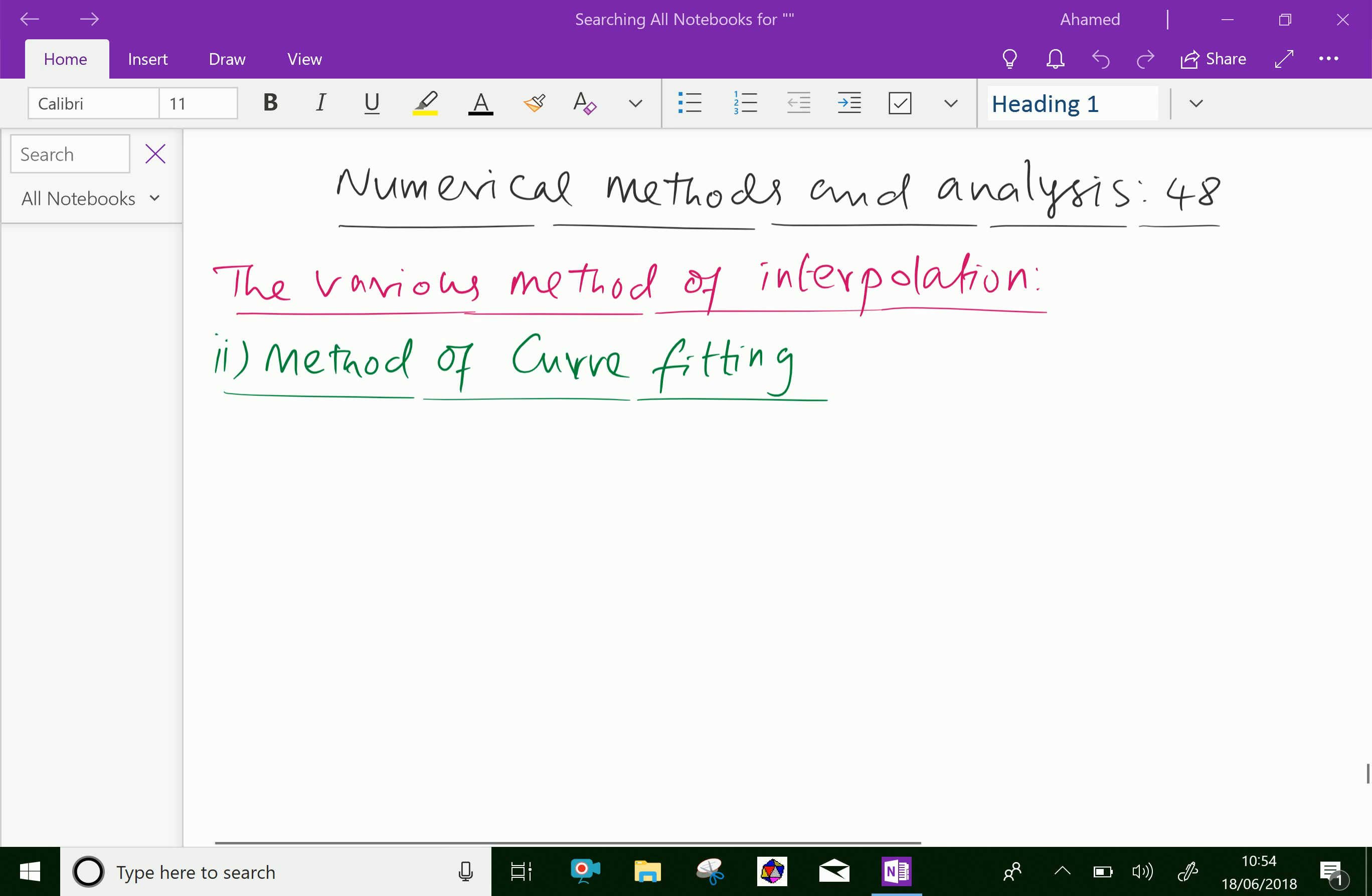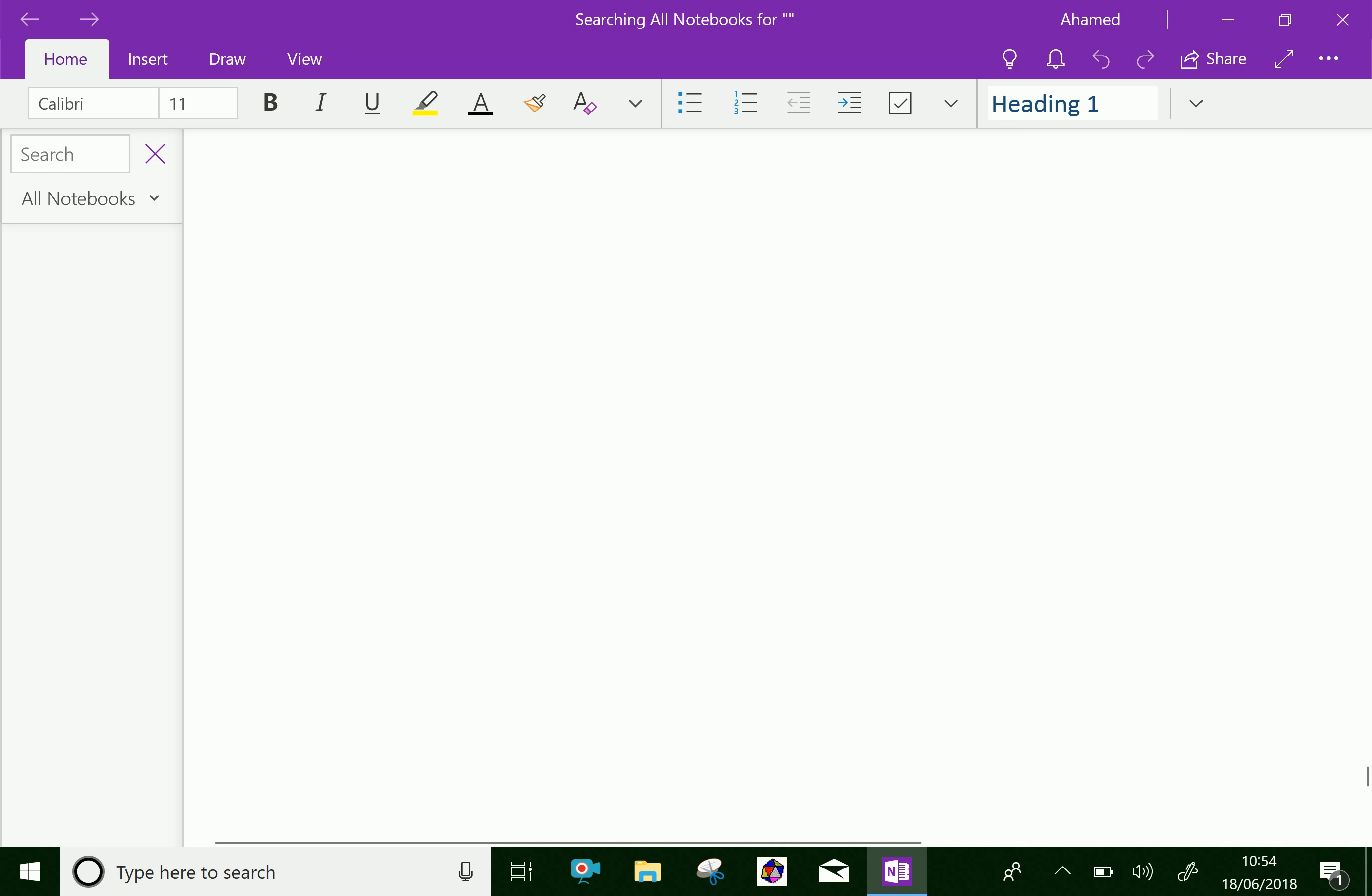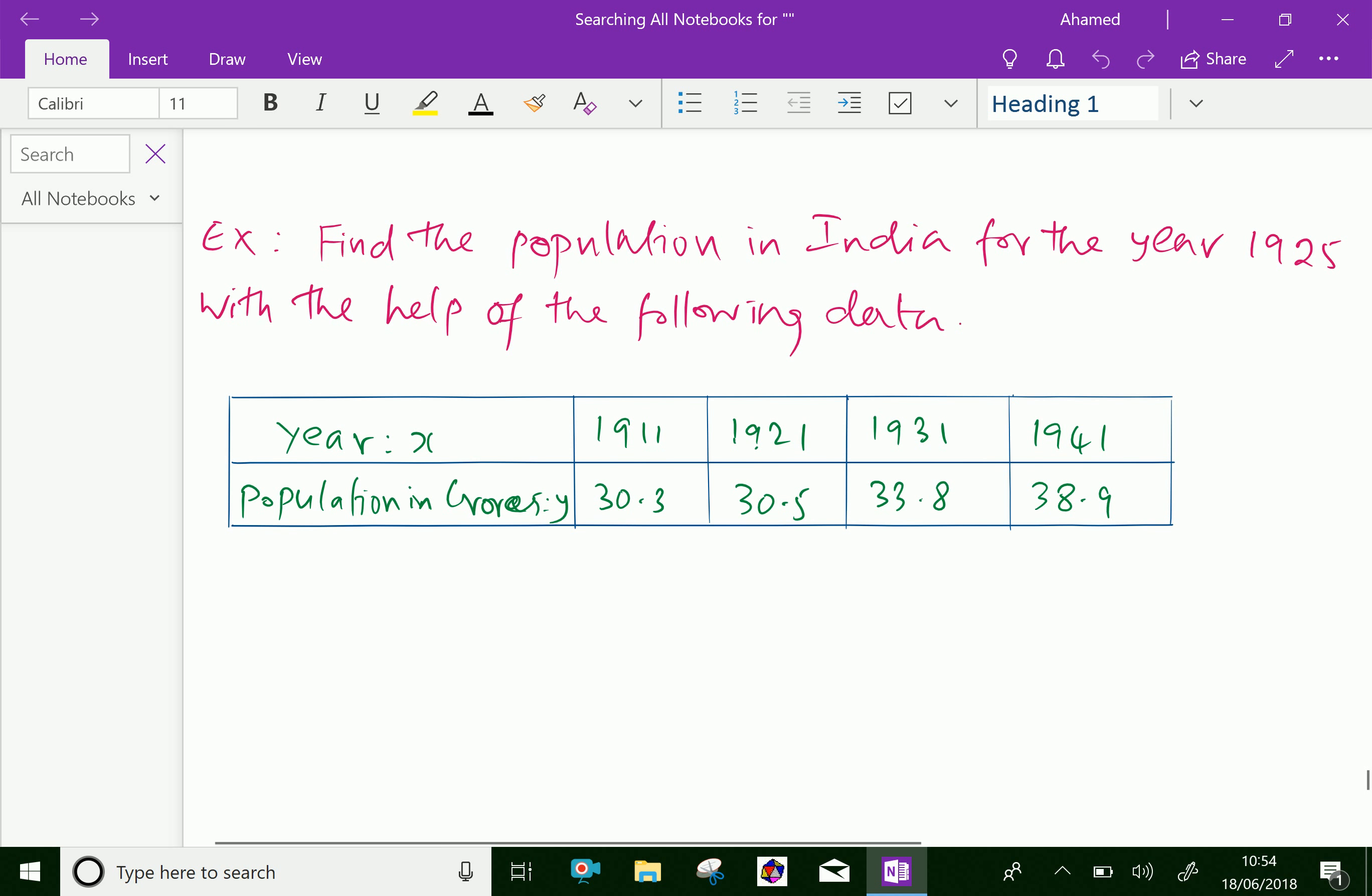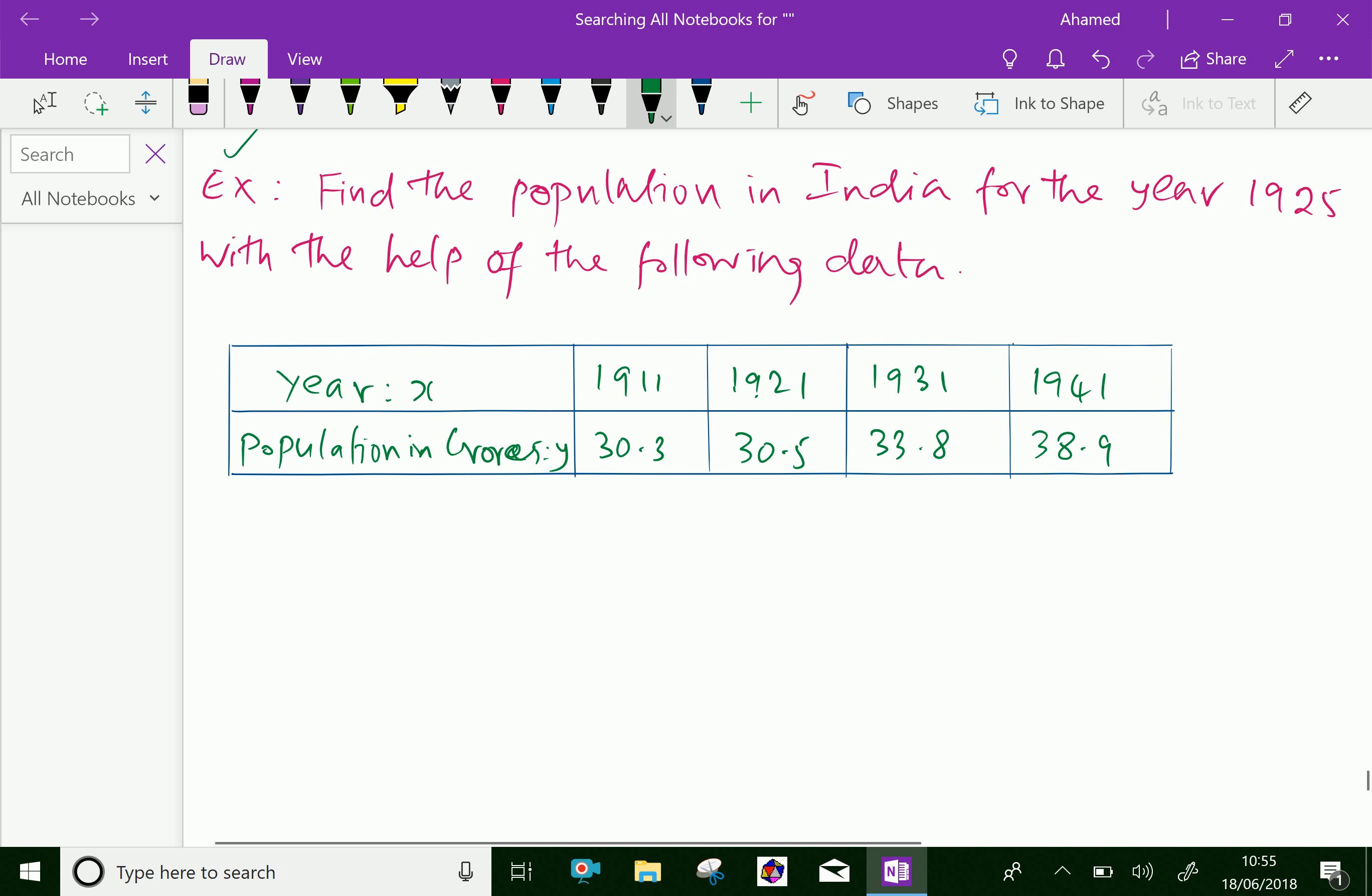Now, let us discuss with some problems. Look here, with the help of the following data. Here, in X, 1911, 1921, 1931, 1941 is given. Regarding that population is also given as in crores, 30.3, 30.5, 33.8 and 38.9.